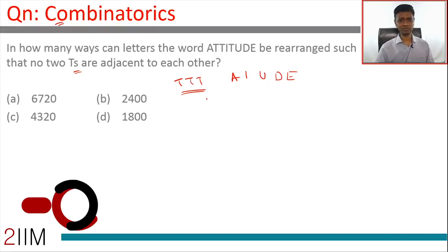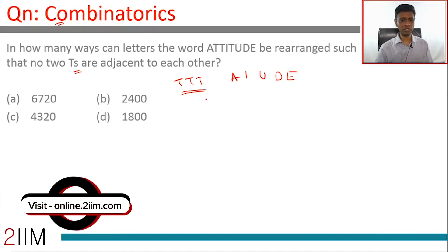...is to forget the T's. Let's arrange A, I, U, D, E. These can be arranged in 5 factorial ways. Completely let go of the T's - no T's here. A, I, U, D, E can be arranged in 5! ways. After we do this, we have to put the T's somewhere in between.